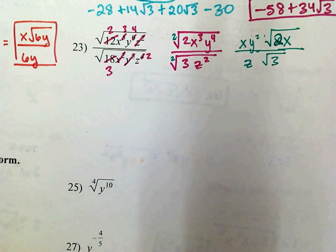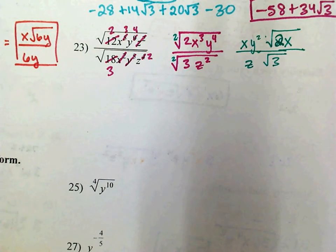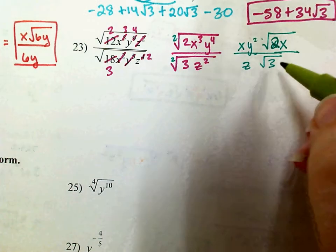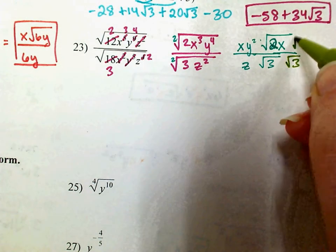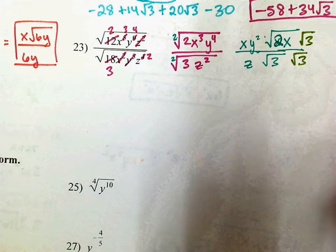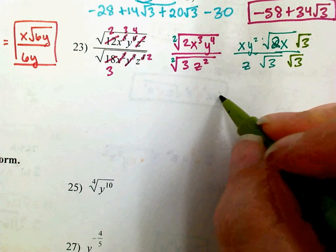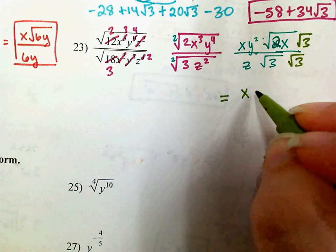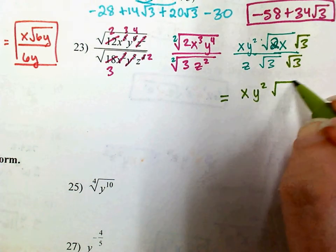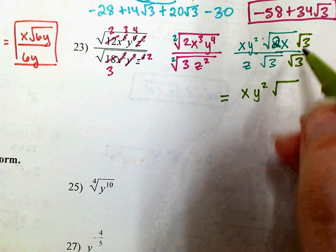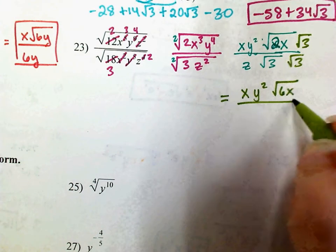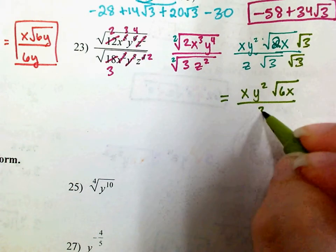Now the idea is to rationalize, so I need to multiply top and bottom by the square root of 3 so that I no longer have a square root in the denominator. That makes this x, y squared, times the square root of 6x over — that's just 3 — so 3z.